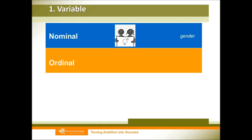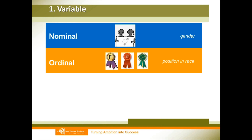For ordinal variables, it is also about categories, but these categories can be ranked. For example, position in a race: the first person gets first prize, then second prize and third prize. So it is about ranking, and that is an ordinal variable.